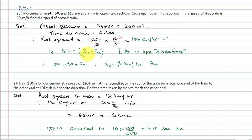Since they move in opposite directions, relative speed = speed 1 + speed 2 = 150 km per hour. Speed of first train is 80 km per hour. So 150 = 80 + s2, giving s2 = 70 km per hour. This is the answer.